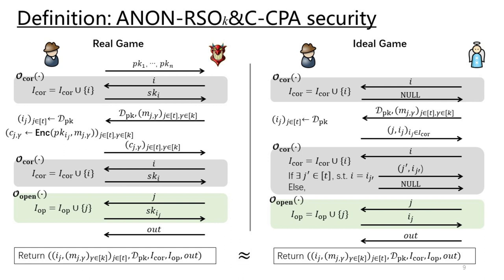The ideal game is similar, except that there are no public keys and no encryptions. We use the indices of public keys to replace the public keys. Note that the simulator will not receive any ciphertext, so she does not have any information about the indices of the public keys corresponding to the unopened and uncorrupted users. This is how we formalize the notion of anonymous RSO-K&C security.